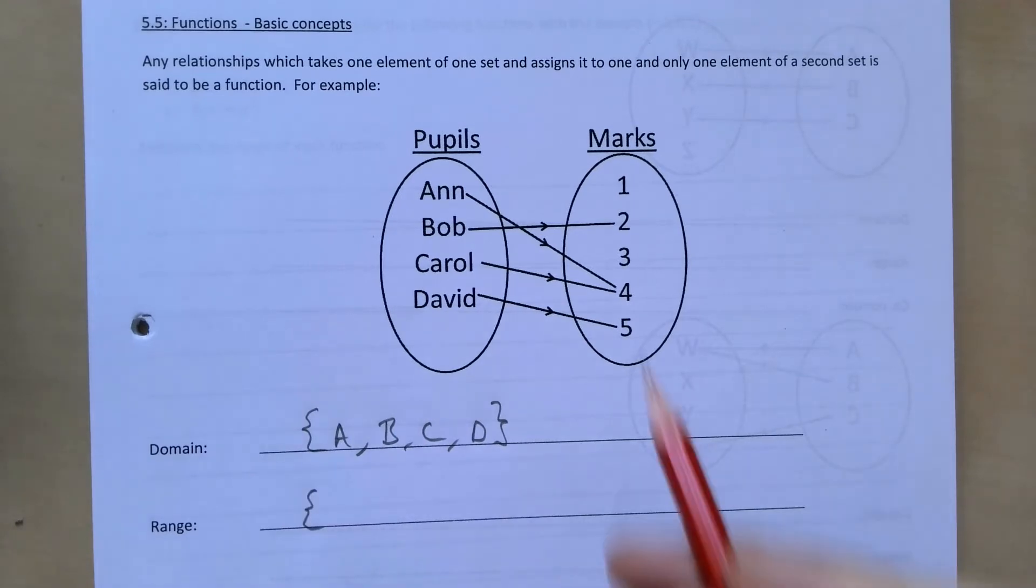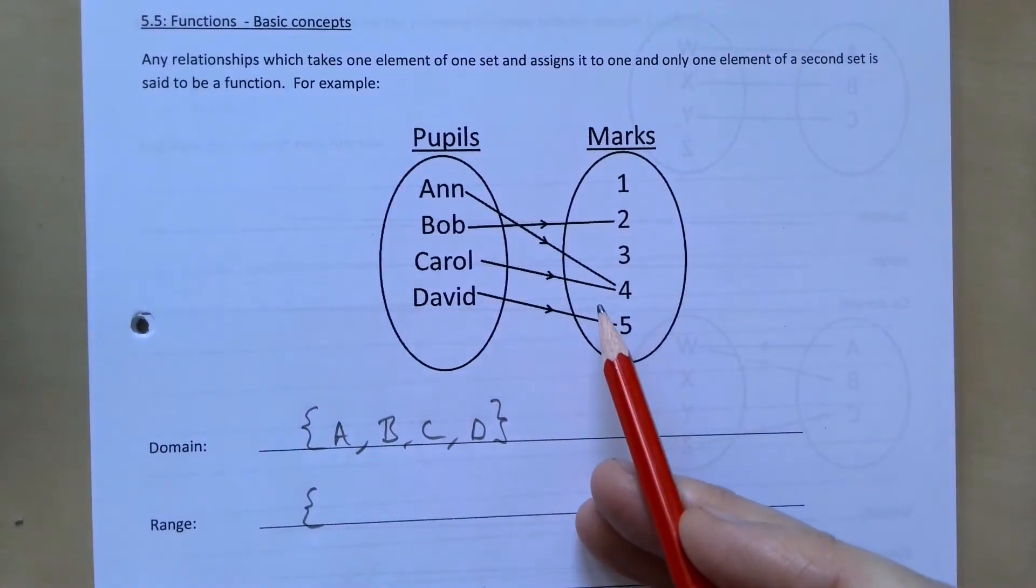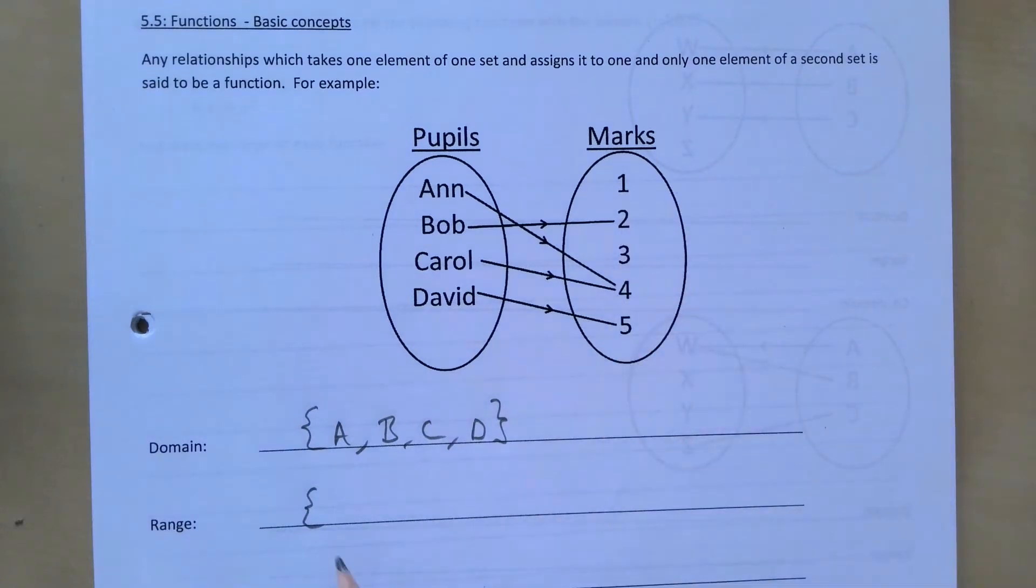So what numbers did they get effectively? And so in this case it's going to be 2, 4, and 5.